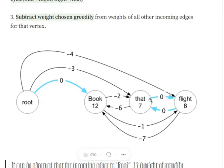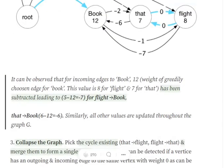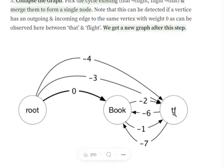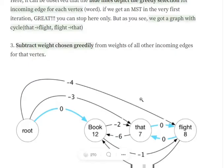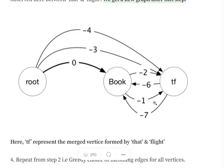As mentioned, a key feature of a spanning tree is that it must not contain cycles. Where we detect a cycle, we merge those two nodes together into a new combined node — in this case called 'TF'. All incoming edges to both original nodes now point to TF, and all outgoing edges from both nodes go out from TF. So, for example, the edge minus 1 that was going to 'flight' and minus 2 going to 'that' now both point to TF.